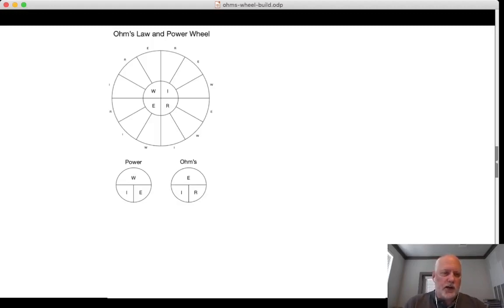Here I've added two little wheels, one for power and one for Ohm's law. The power law states that wattage is equal to the intensity or the current times voltage. And Ohm's law says voltage is equal to intensity or current times resistance.